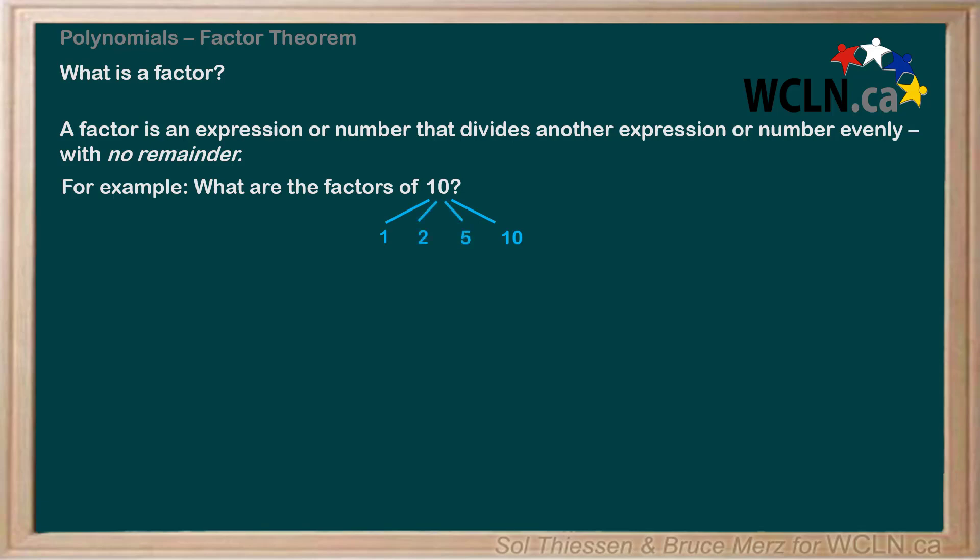Are these all the possible integer answers? What about negative numbers? For example, negative 1 times negative 10. When considering possible factors, always remember to consider both positive and negative pairs.